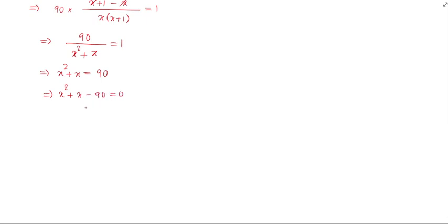Now there are two ways to solve this quadratic: breaking the middle term or the Sridharacharya formula. We use breaking the middle term. We need to rewrite x squared plus x minus 90 equals 0, finding two numbers whose difference is 1 and whose product is 90.